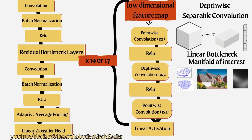So the manifold of interest is really focusing on the output that's been sent through the low dimensional feature map and through convolution — representing images of things that we actually care about. We're reducing the dimensionality to the manifold of interest, which only represents the images that we would actually care about sending through.